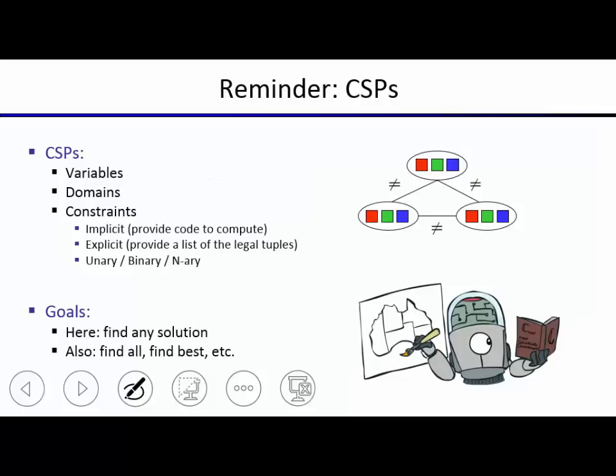So what was a CSP? A CSP was defined by a set of variables. Each variable has a domain — the set of values that variable is allowed to take on. And then there was a set of constraints specifying what combinations of values are okay. They could be specified implicitly via a function call, or explicitly by pairs of values for binary constraints or triples for ternary constraints. Unary constraints involve one variable, binary involve two, and n-ary involve n variables.